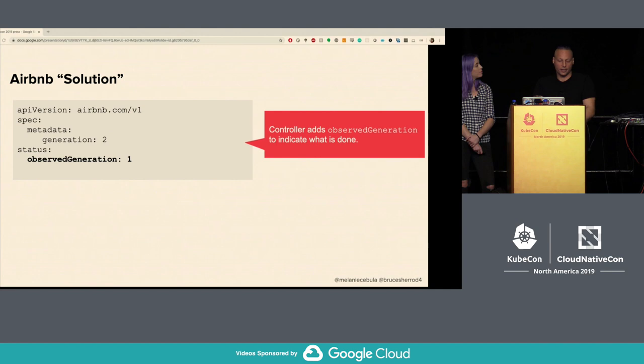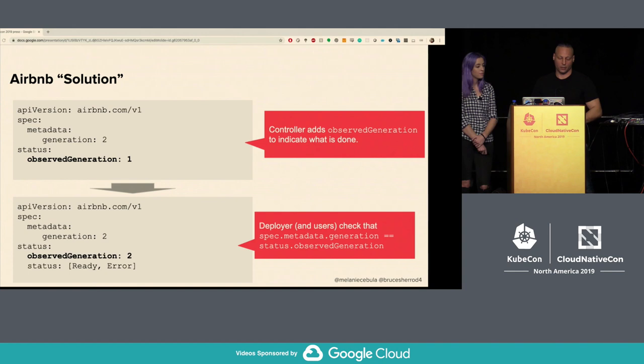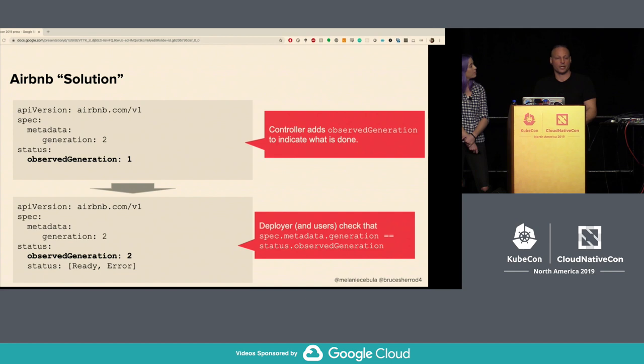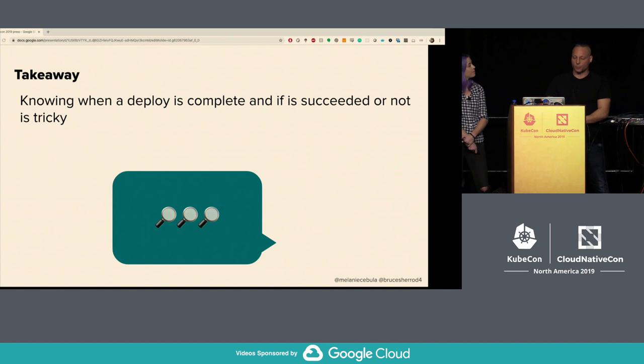Our solution: Kubernetes 1.12 now provides a field spec.metadata.generation, an auto-incrementing integer provided by Kubernetes itself. When you update a resource, Kubernetes changes that generation from, say, 1 to 2 on kubectl apply — the status stays the same, but you can detect what's going on. We add to the status field an observed generation — the last generation the controller has run on. When the controller sees a new version where generation doesn't match observed generation, it reapplies changes and updates the status. Takeaway: knowing when a deploy is complete and whether it succeeded is tricky.